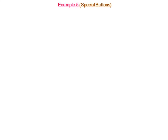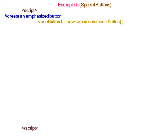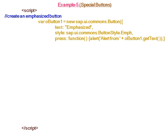In Example 5, we will discuss special buttons in the application section. The first button is an emphasized button. We create Button 1 with text 'Emphasized', style set to ButtonStyle.Emphasized, and the press event — when the user presses this emphasized button, they will get an alert. We attach Button 1 to the div element.